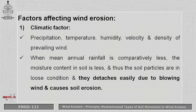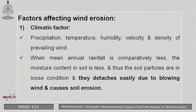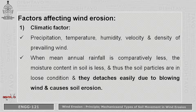Factors affecting wind erosion: first is the climatic factor. In this, many factors are considered like precipitation, temperature, relative humidity, velocity and density of prevailing wind. When the rainfall is comparatively less, the moisture content in soil is very low, meaning the soil is too dry, so the soil particles detach from the soil surface very easily and cause soil erosion.